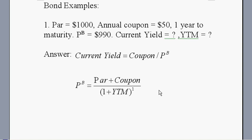Suppose you have a bond with a par value of $1000. It pays an annual coupon of $50 per year and it has one year to maturity. This assumption makes the calculation very easy. The bond's current market price is $990. The question asks you what is its current yield and what is yield to maturity.